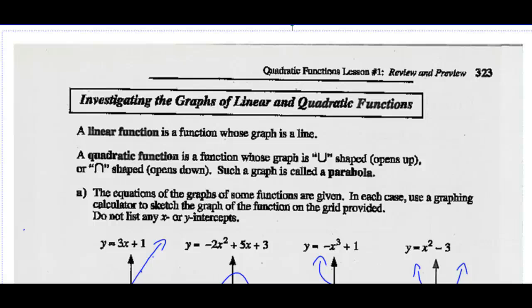Let's investigate the graphs of linear and quadratic functions. A linear function is a function whose graph is a line. A quadratic function is a function whose graph is U-shaped — it can open up or it can open down, and we call these graphs parabolas. Use a graphing calculator to sketch the graph of each function on the grid provided. You don't have to list any x and y intercepts, just do a rough sketch. Pause the video, draw the sketches, and see what you come up with.